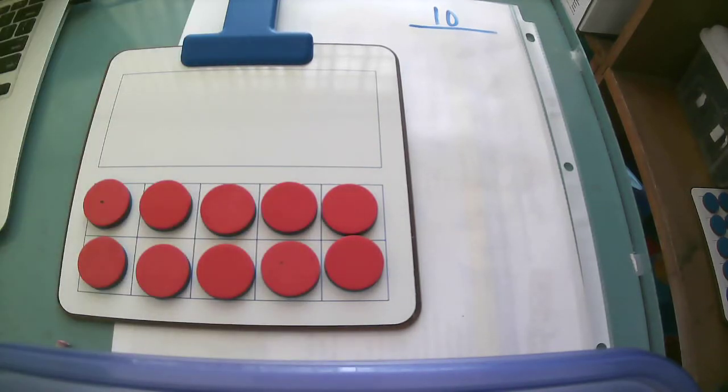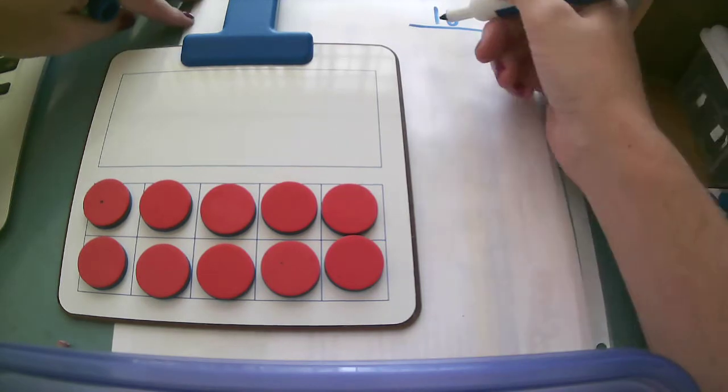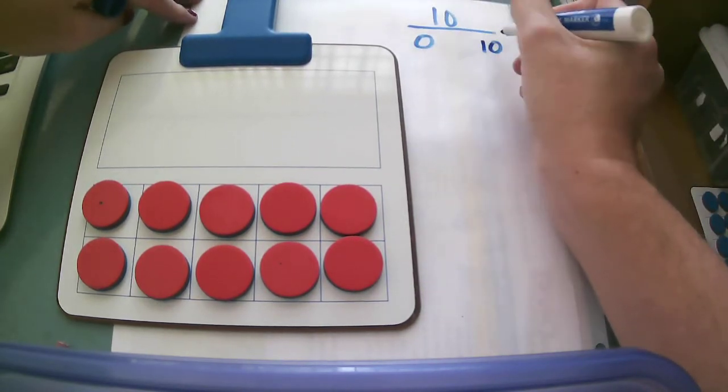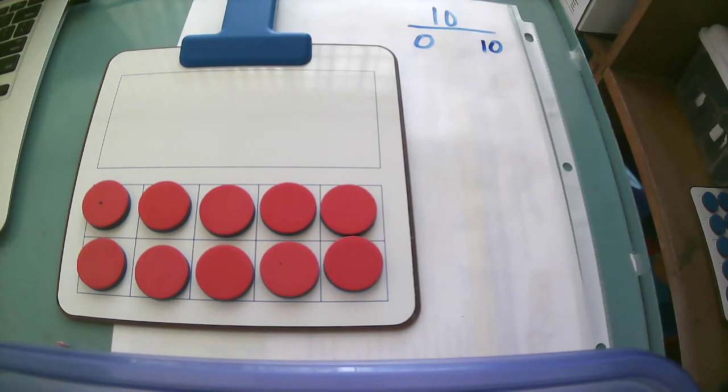So I have 10 red and I have zero blue, so I'm gonna put zero here and then I'm gonna put 10 because I know that zero and 10 are number partners for the number 10, because when I join zero and I put 10 together it makes 10.